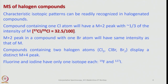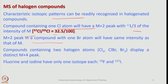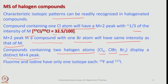Now let us look into mass spectra of halogen compounds. Characteristic isotopic patterns can be readily recognized in halogenated compounds, similar to what we saw for sulphur. Compounds containing one chlorine atom will have an M+2 peak with one-third the intensity of M — for example, M(³⁷Cl)/M(³⁵Cl) is approximately 32.5/100. The M+2 peak in a compound with one bromine atom will have the same intensity as M. Compounds containing two halogen atoms — Cl₂, ClBr, or Br₂ — display a distinct M+4 peak.